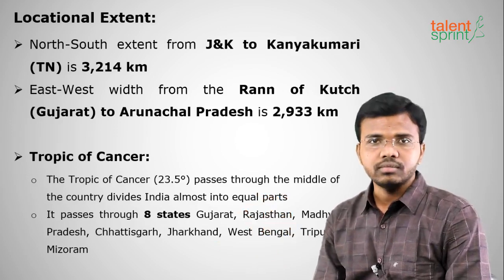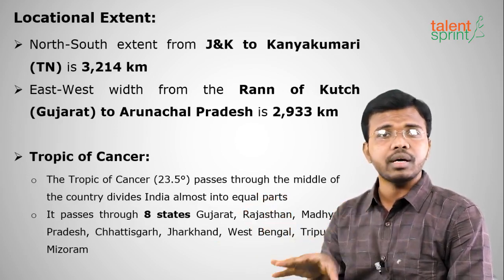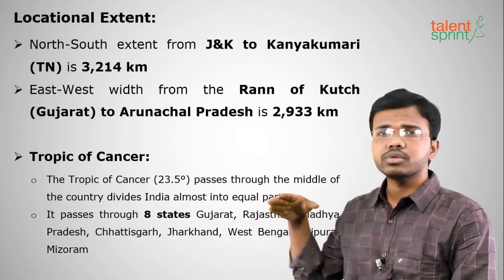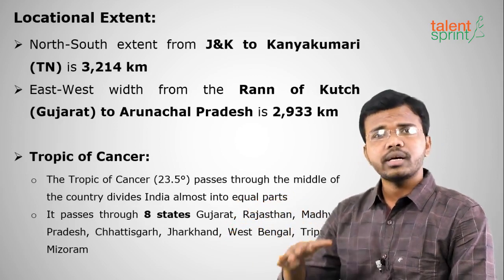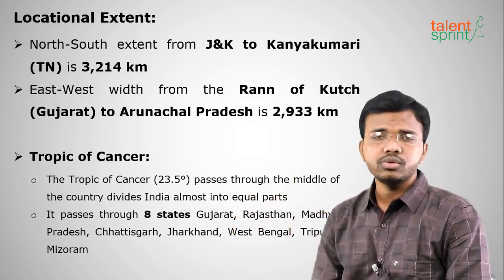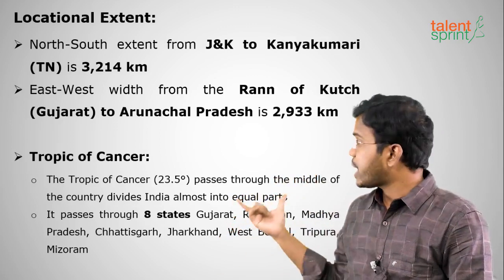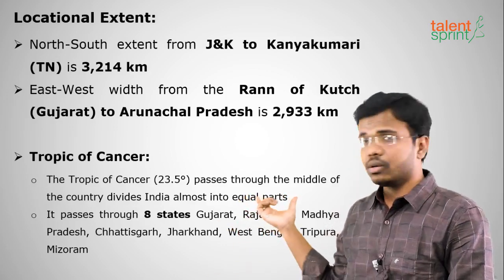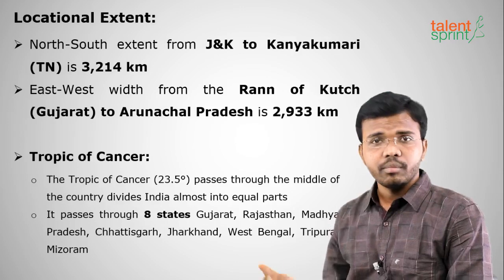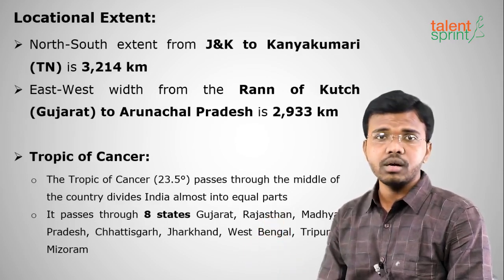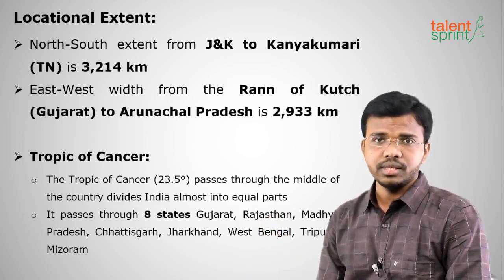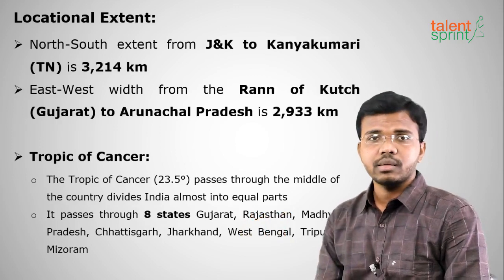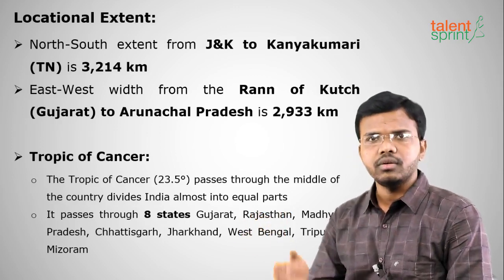The Tropic of Cancer at 23.5° N passes through India. The Equator and Tropic of Capricorn do not pass through India. The Tropic of Cancer passes almost through the middle of the country, dividing it into nearly two equal parts. It passes through eight states from west to east: Gujarat, Rajasthan, Madhya Pradesh, Chhattisgarh, Jharkhand, West Bengal, Tripura, and Mizoram.